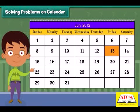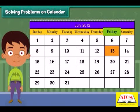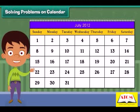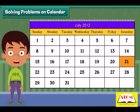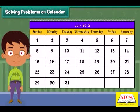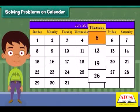What day is it on the 13th of July? It is Friday. What is the date on the second Saturday? It is the 14th of July. Is the 21st a Sunday? No, it is not a Sunday — it is a Saturday. How many Thursdays are there in this month? There are four Thursdays in this month.